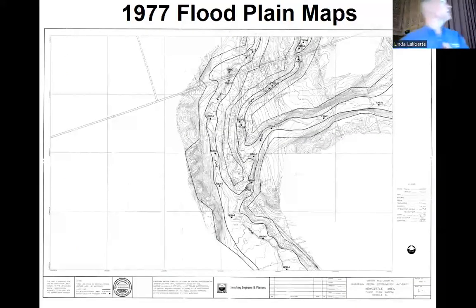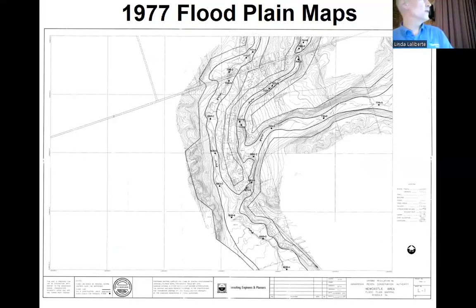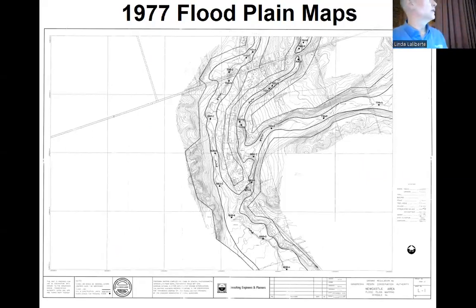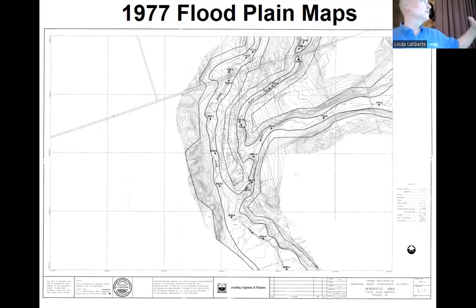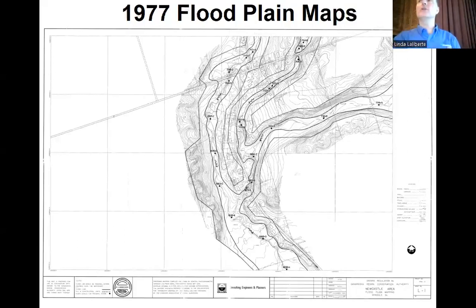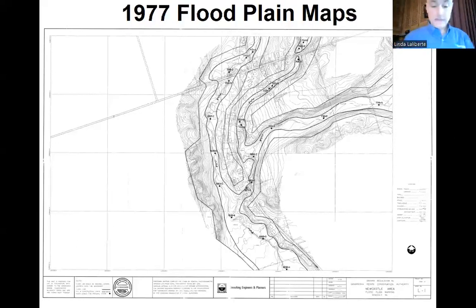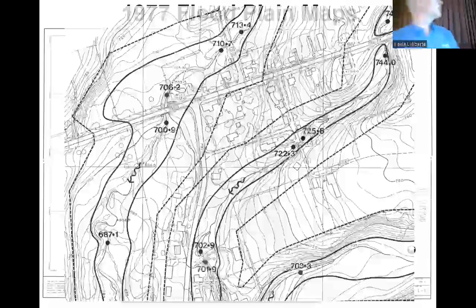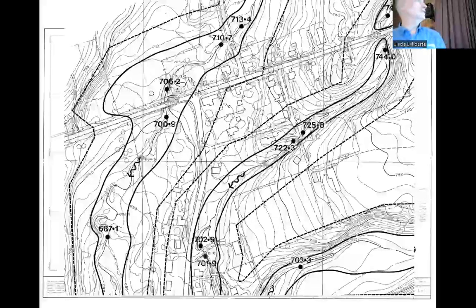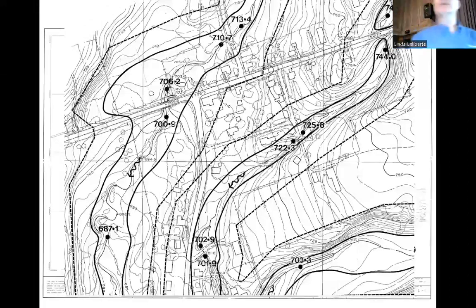Just to give you a sense of what the 1977 maps look like — the dark lines along the creek are the estimates of the floodplain. The dots are cross-section locations where the geometry of the valley and floodplain were coded into the original punch card model, and you can get an elevation in feet above sea level at each cross section. When you zoom in, this is what it looks like — this is just the village of Lester on the 1977 map.